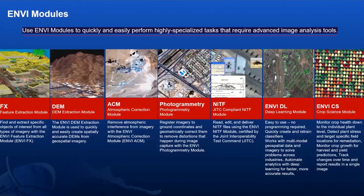The photogrammetric module is used for auto-rectification, image registration, and georeferencing of data — tasks we do continuously. It's also a defense-related module used for defense-specific purposes. The deep learning module is a very easy and specific tool for performing deep learning exercises with no programming required. You can create and train your model to get specific classified results.